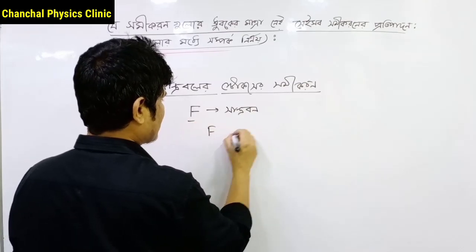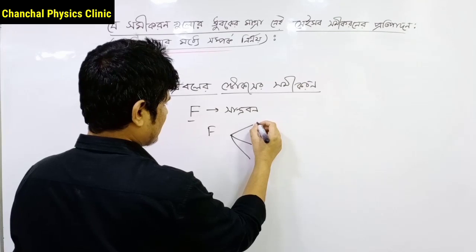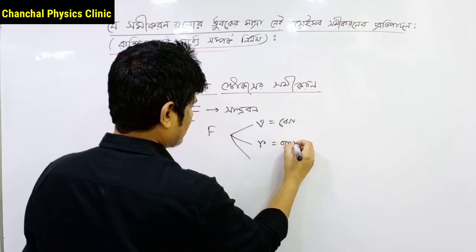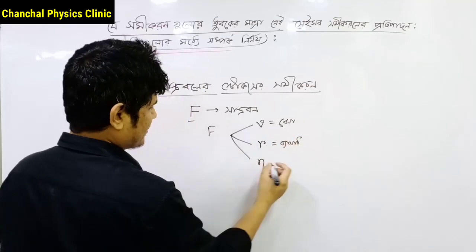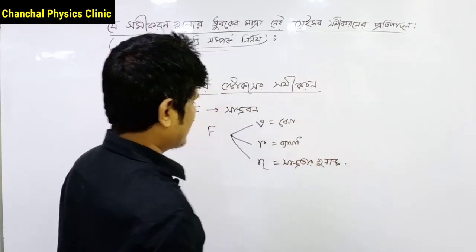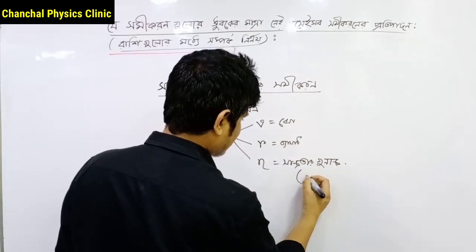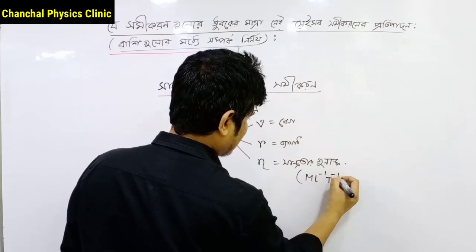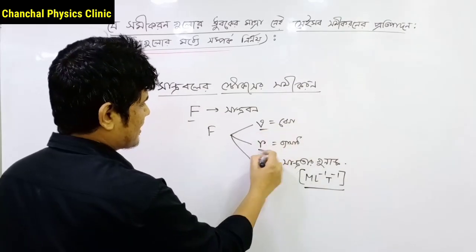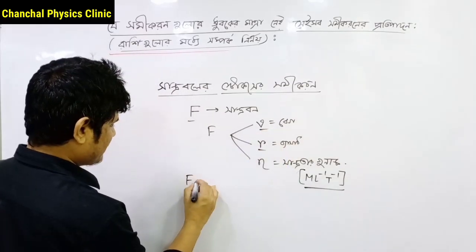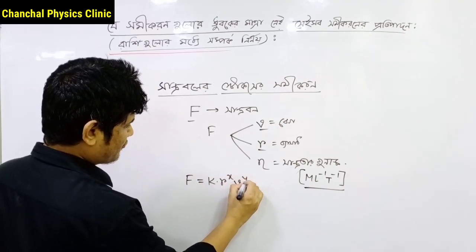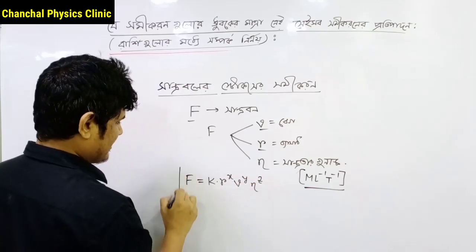If this is not enough, this will be 3. If this is not enough, this is 5. This discusses the coefficient of density (সান্দ্রোতার গুণাংক), and the magnitude of that coefficient is M L to the power of negative 3, remaining from the analysis.